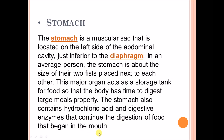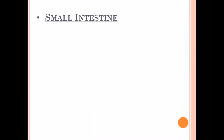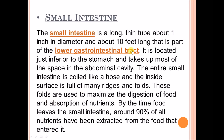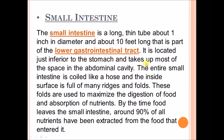The small intestine is a long, thin tube about one inch in diameter and about 10 feet long, and is part of the lower digestive tract. It is located just inferior to the stomach and takes up most of the space in the abdominal cavity. The entire small intestine is coiled like a hose, and the inside surface is full of ridges and folds. These folds are used to maximize the digestion of food and absorption of nutrients. By the time food leaves the small intestine, around 90 percent of all nutrients have been extracted.